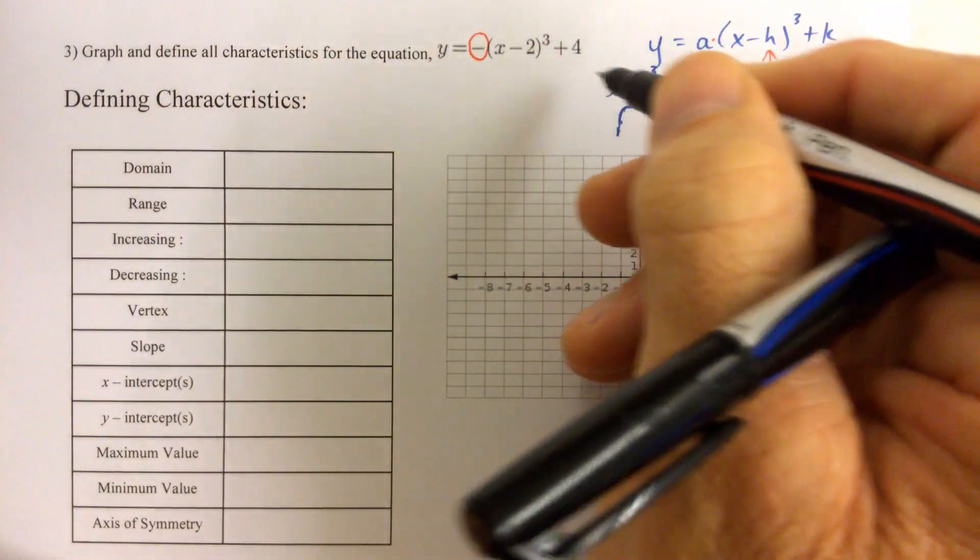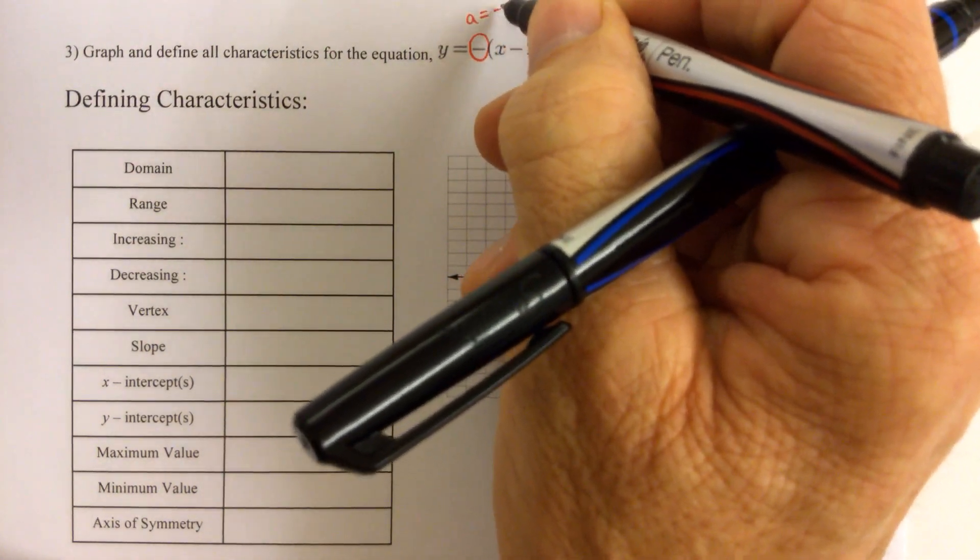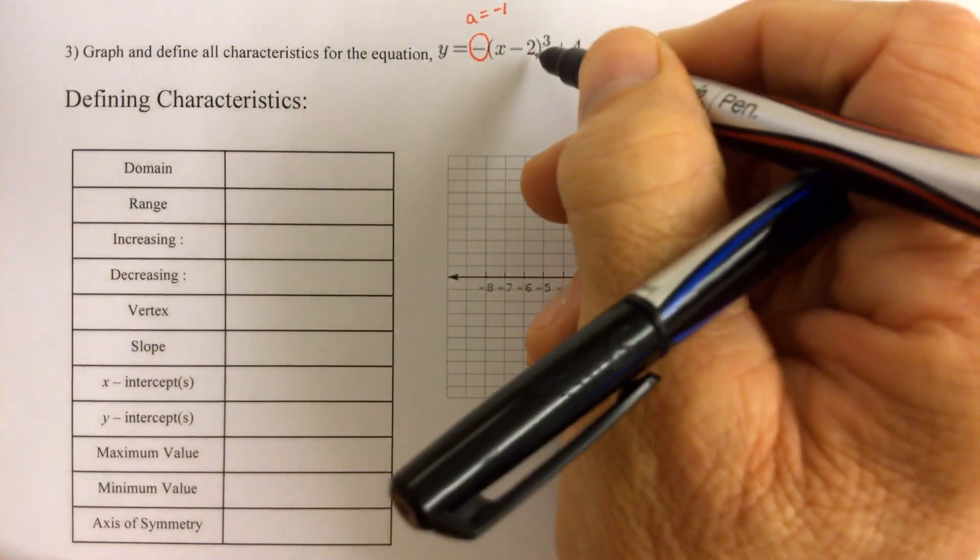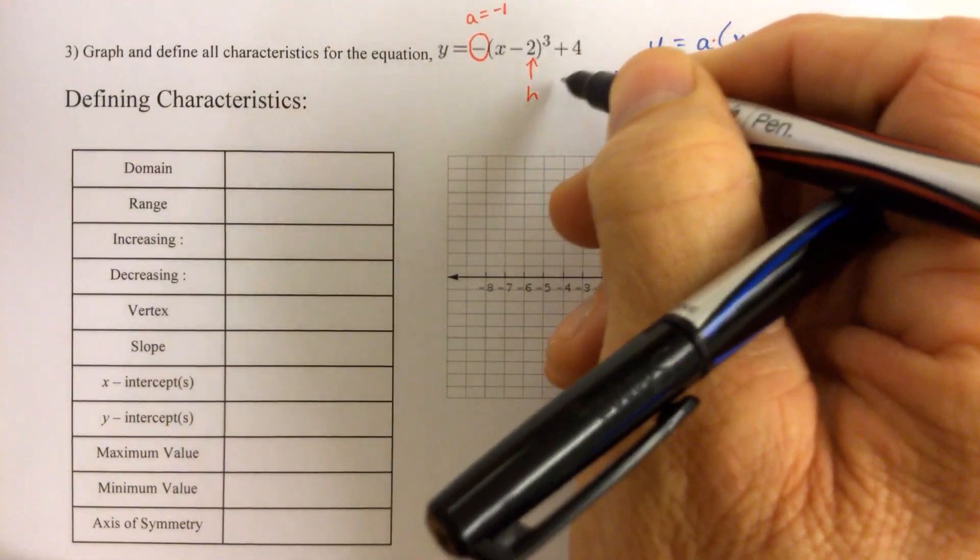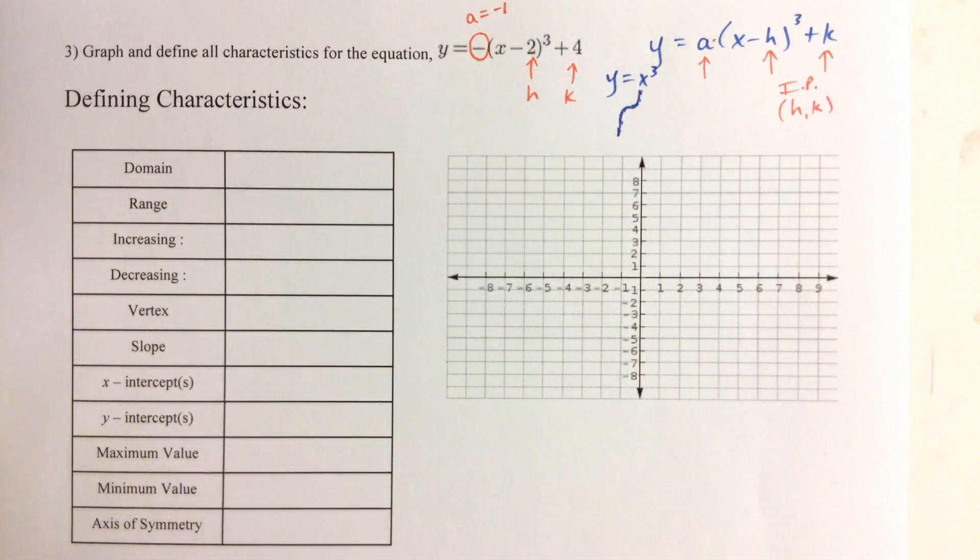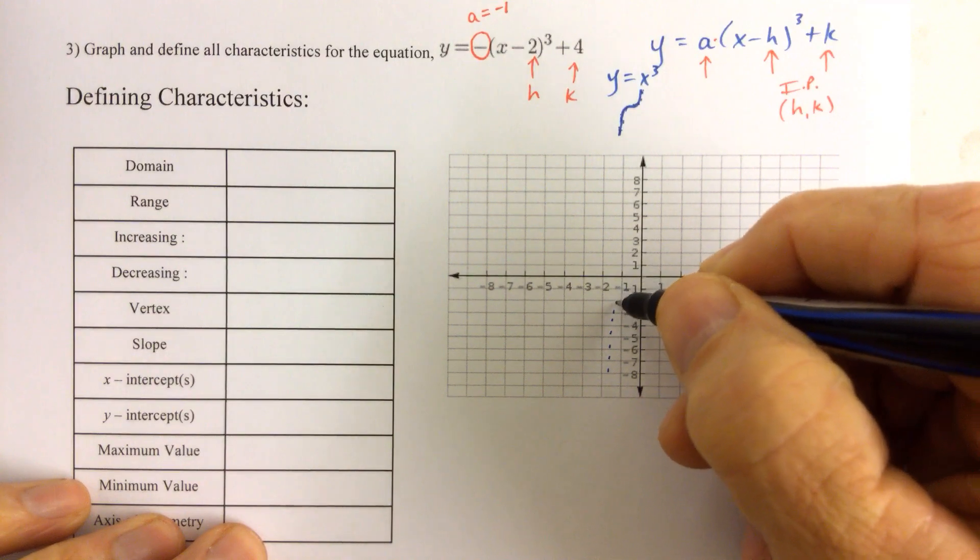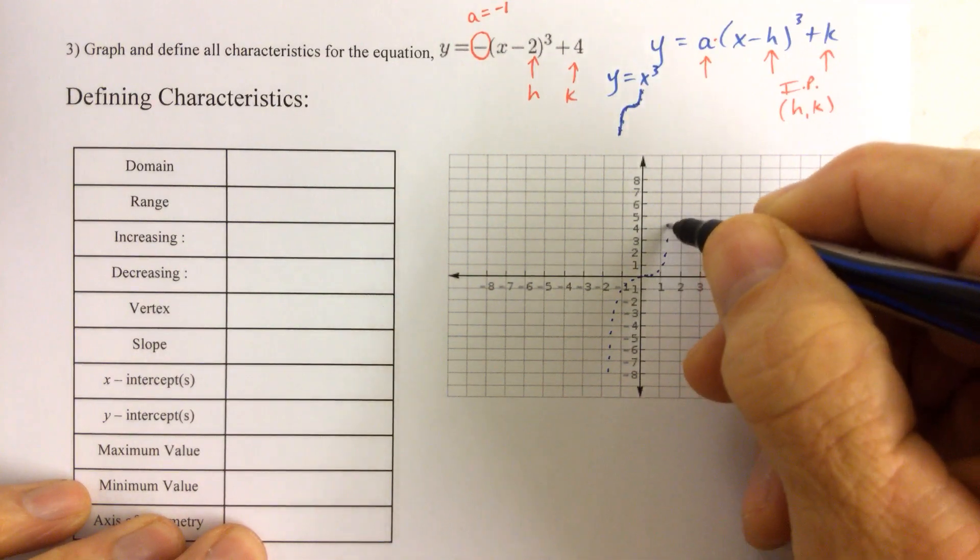If we look at this equation here, a minus sign out in front means that a equals negative one. A two right there means that the h value is two and the k value is four. What I look at is the original graph parent function that looks like this.